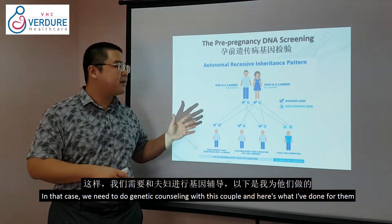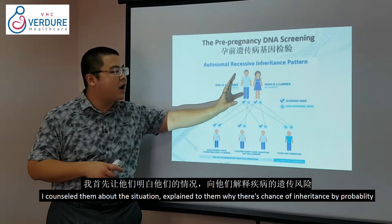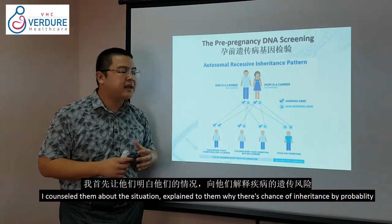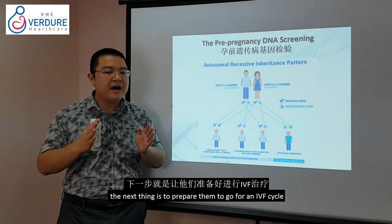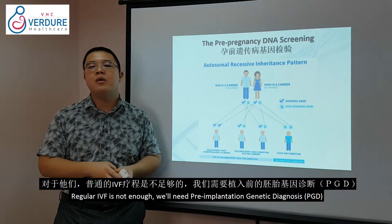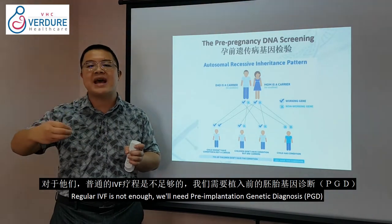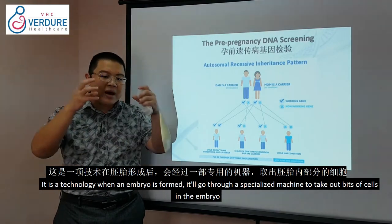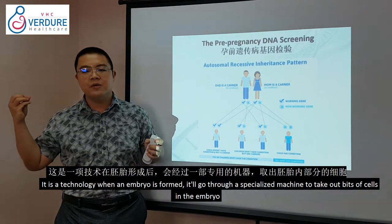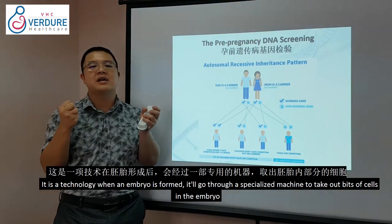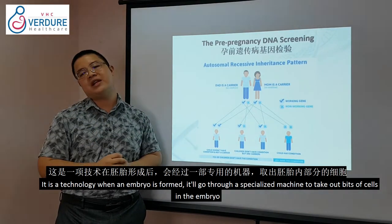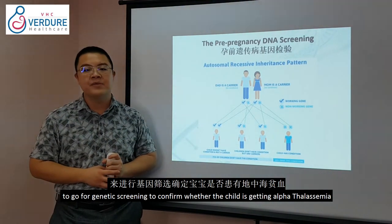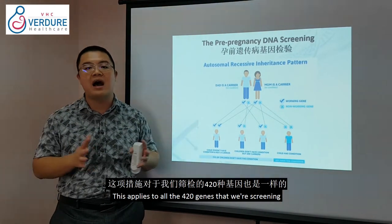I counselled them about the situation and explained the probabilities. The next step was to prepare them for an IVF cycle with pre-implantation genetic diagnosis, or PGD. PGD is a technology where, when the embryo is created, bits of cells are taken from the embryo for genetic screening to confirm whether the child has alpha thalassemia — and this applies to all 420 genes we screen for.